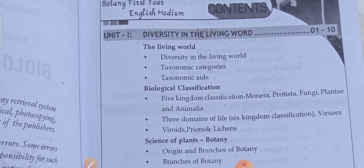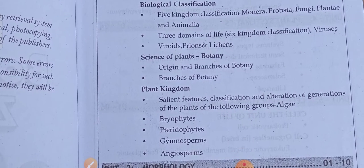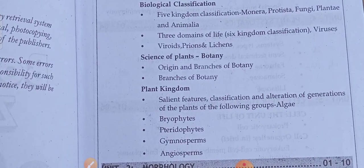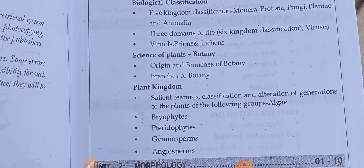The first unit is diversity in the living world — living world, biological classification, plant kingdom. I'm just listing down all the topics, not discussing them in detail. You can take a screenshot. This is the syllabus for those who are going to write the bridge course, the BIPC certificate in botany syllabus. Unit one: diversity in the living world.